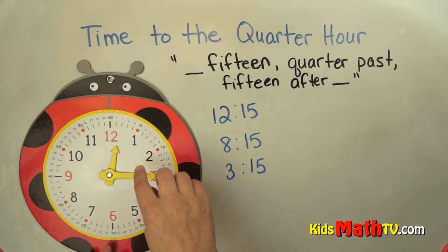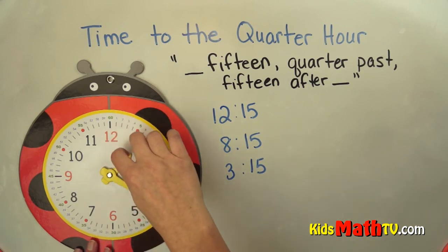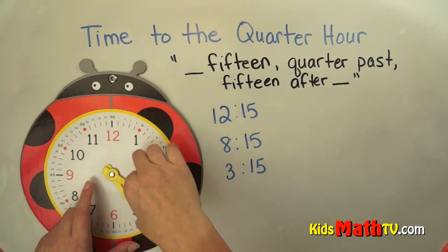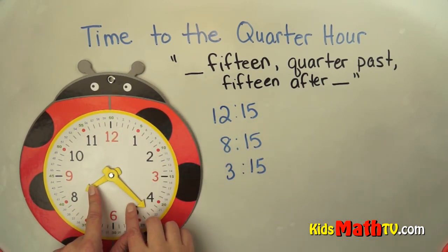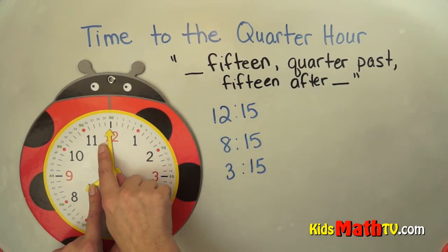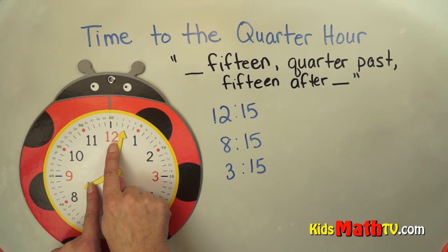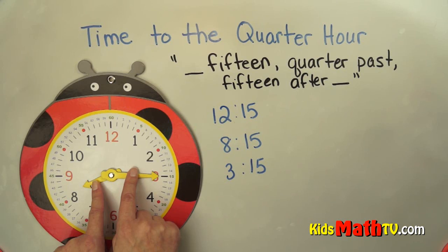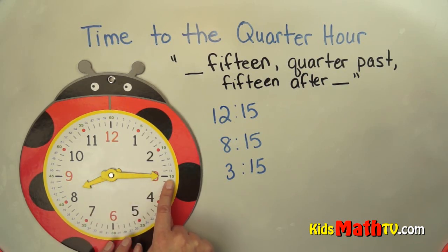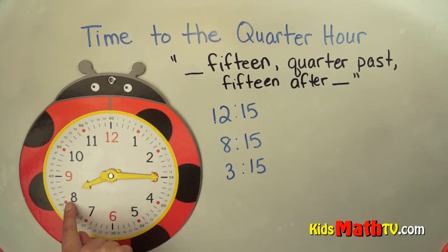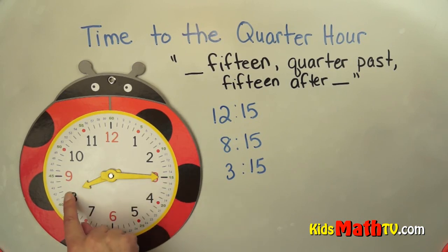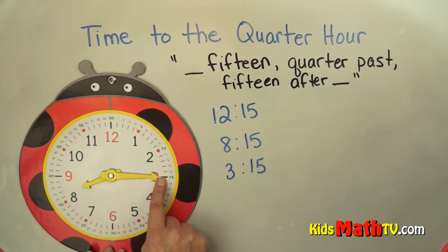Let's do 8:15. For 8:15, the hour hand is going to go slightly past the 8 and the minute hand — the big hand — is going to be on the 15. So this is 8:15, quarter past 8, a little bit past 8 o'clock.